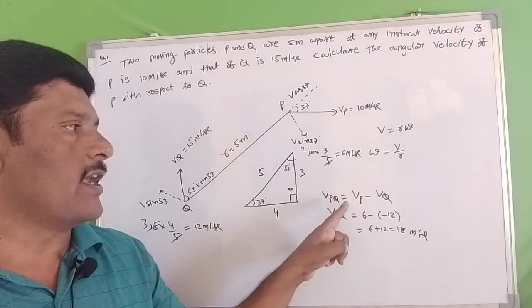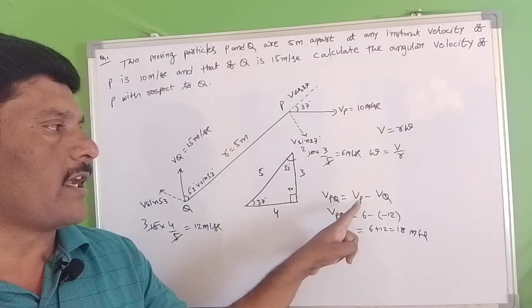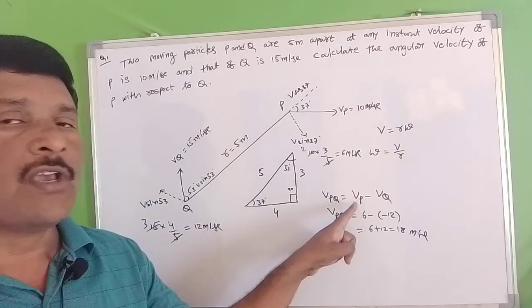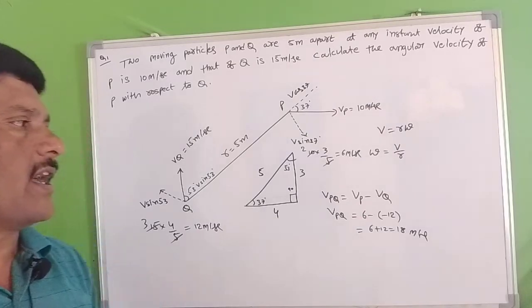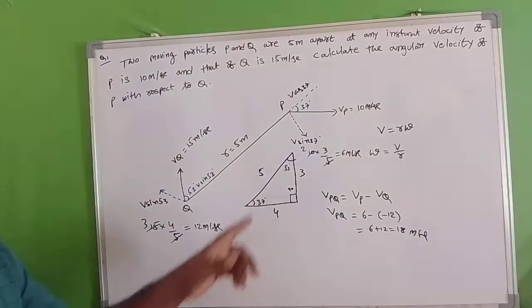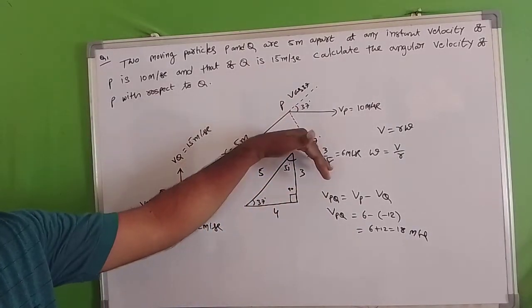The relative velocity is 18 meters per second. The angular velocity of P with respect to Q equals velocity of P with respect to Q divided by R — the distance between P and Q. So omega equals 18 by 5 radians per second.